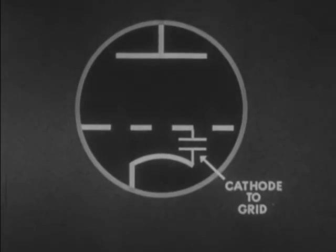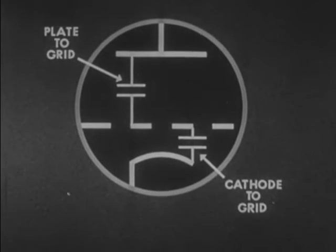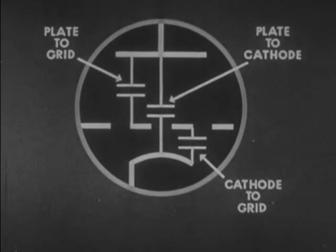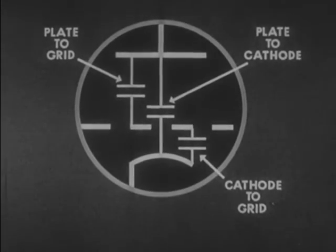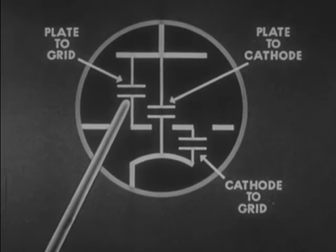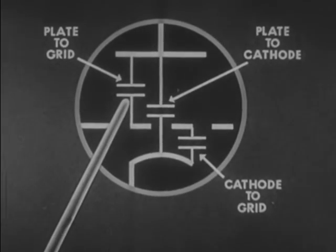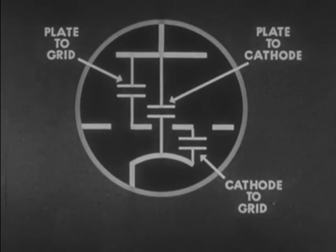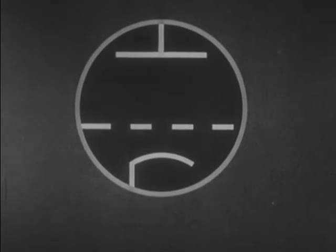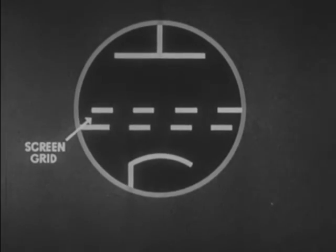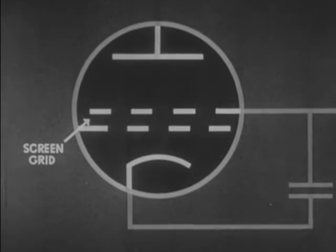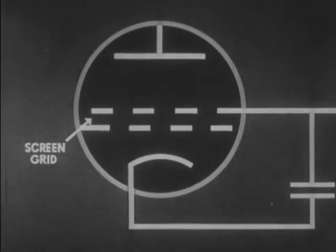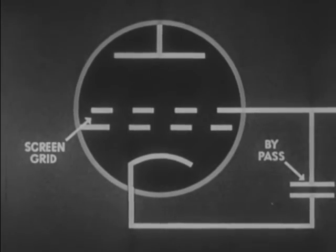The simple triode tube is actually a complicated electric condenser having three capacitances to be considered: cathode to grid, plate to grid, and plate to cathode. The capacitance of most importance exists between grid and plate. This capacitance may produce undesired coupling between the input and output circuits. To shield the control grid, another grid known as the screen grid may be added to the triode tube. A condenser connects the screen grid to the cathode circuit, and this bypass condenser enables the screen grid to electrically isolate the plate and control grid.